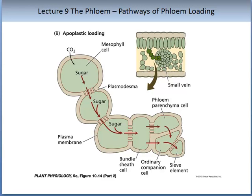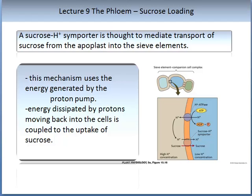It is after the bundle sheath cell where this route changes. The compounds enter the parenchymal cells and the ordinary companion cells, and then into the sieve cells — some through membranes, some over membranes, or in between the membranes. An important mediator of sucrose loading is a molecule called the sucrose H+ importer, thought to transport sucrose from the apoplast into the sieve elements. This mechanism uses energy generated by the proton pump, with energy dissipated by protons moving back into the cells coupled to the uptake of sucrose. Note the role of ATP and conversion to ADP in this proton pump.